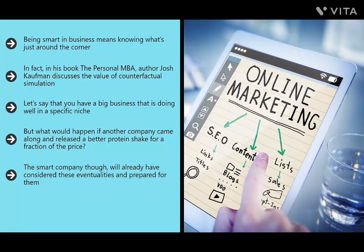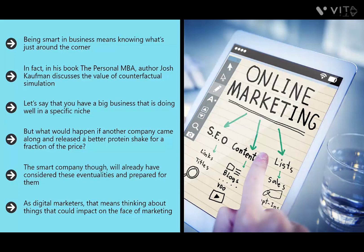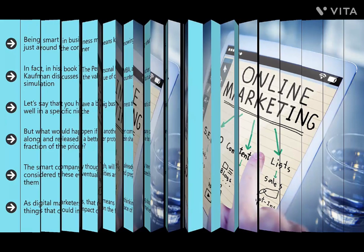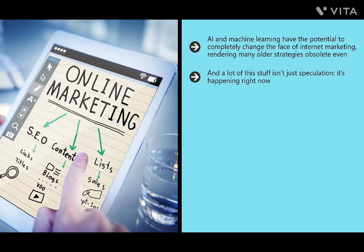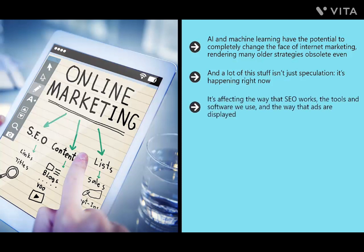This is counterfactual simulation — thinking about what's just around the corner and preparing for those possibilities. For digital marketers, that means thinking about things that could impact marketing, and one of the biggest is artificial intelligence. AI and machine learning have the potential to completely change the face of internet marketing, rendering many older strategies obsolete. Only by preparing for those changes can you ensure your websites hold their position in the SERPs, your advertising remains profitable, and your services remain relevant. AI is already making huge waves right now.